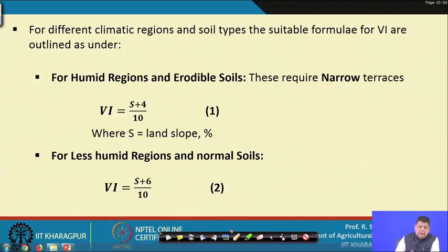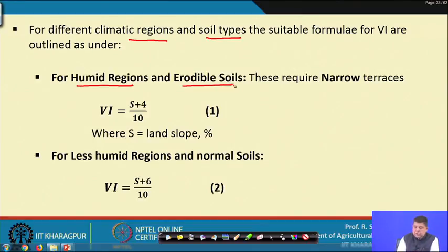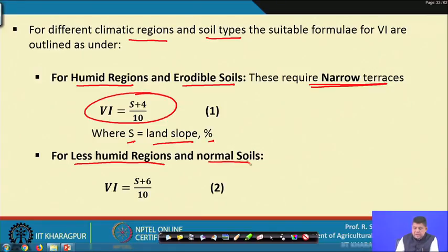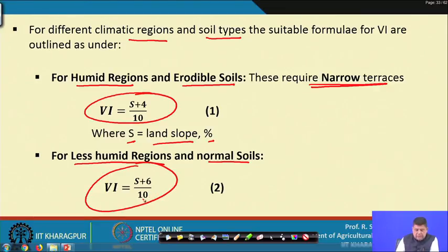For graded terraces, there are specific recommendations for determining the vertical interval based on climatic region and soil type. For humid regions with erodible soils, the formula is VI = (S + 4) / 10, where S is land slope in percent. For less humid or sub-humid regions with normal soils, the formula is VI = (S + 6) / 10, resulting in a slightly wider terrace spacing.